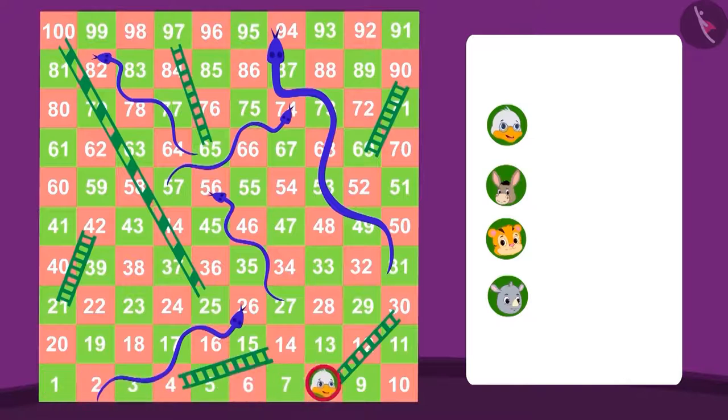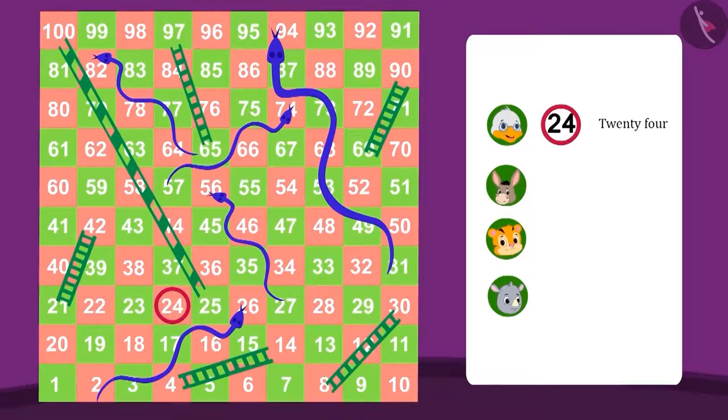Badbole Badak Uncle is on box 24 which is 24 steps ahead of the starting box. Let's see who is on which number in this game.